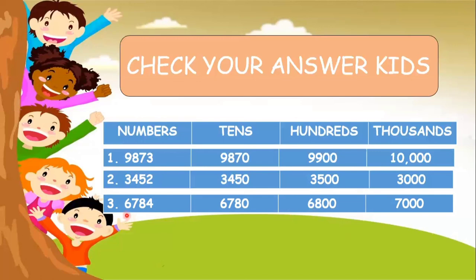In thousands: the thousands place of the given number is number six. The right of number six is number seven, and since seven is more than five, we will add one to number six and make zero the remaining numbers to the right. The answer is 7,000.